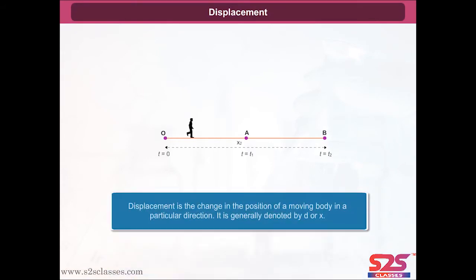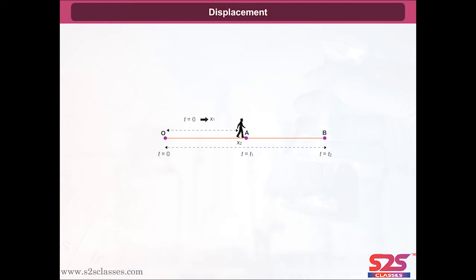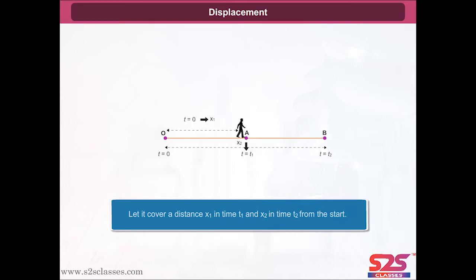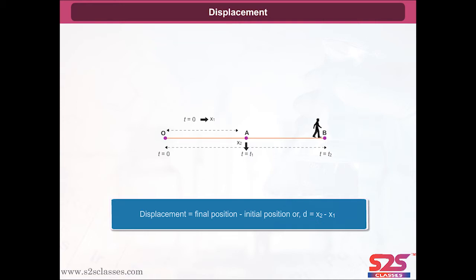Displacement: the change in the position of a moving body in a particular direction is called its displacement. It is generally denoted by D or X. Let a body cover a distance X1 in time T1 and X2 in time T2 from the start. Then the displacement during the time interval T2 minus T1 is: displacement equals final position minus initial position, or D equals X2 minus X1.